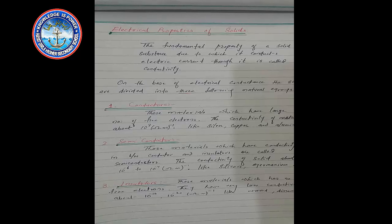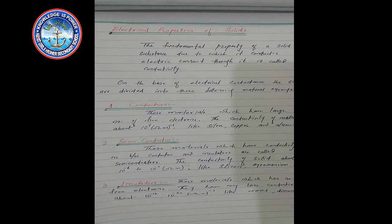Remember that all three — conductor, semiconductor, and insulator — are found in solid form. If we look at a semiconductor, it does not have conductivity like a conductor, nor like an insulator. It means it lies between both — it has some poor conductivity as well as some conductivity.